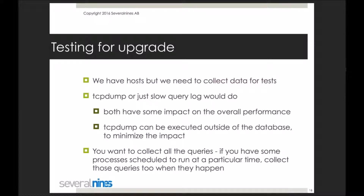Both methods have some impact on overall performance. TCP dump can be executed outside of the database — you can run it on the application host to minimize the impact, which is nice. Another option is MaxScale: if you're using the MaxScale proxy, it allows you to log traffic to a comma-separated value file, though I haven't personally tested the performance of that feature.